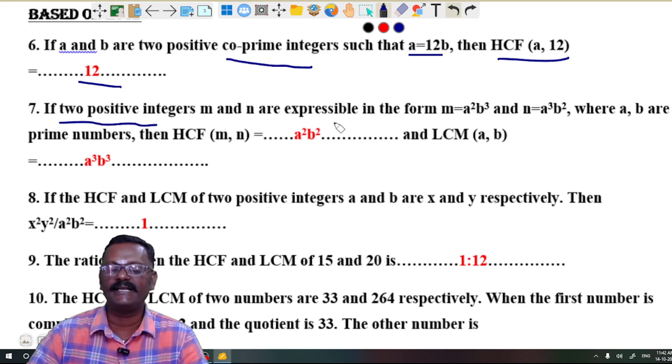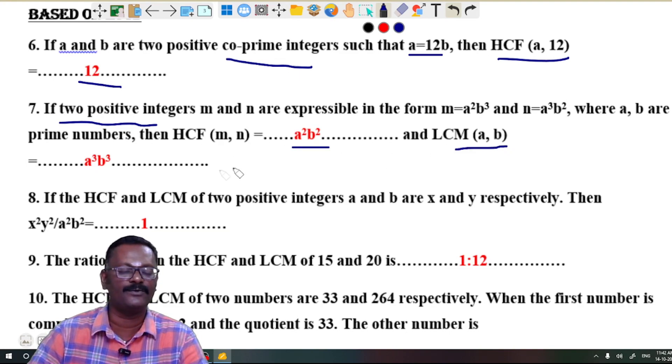Question 7: If two positive integers m and n are expressible in the form m = a²b³ and n = a³b², where a and b are prime numbers, then HCF(m, n) = a²b² and LCM(m, n) = a³b³.